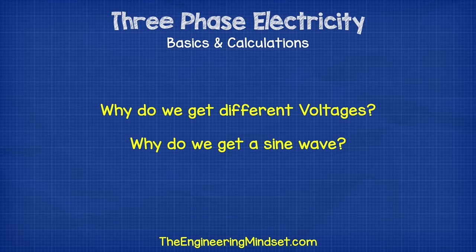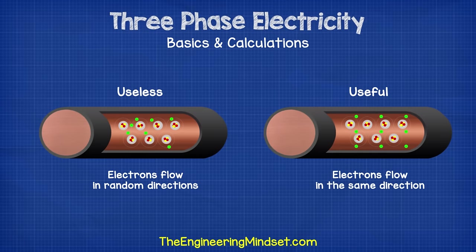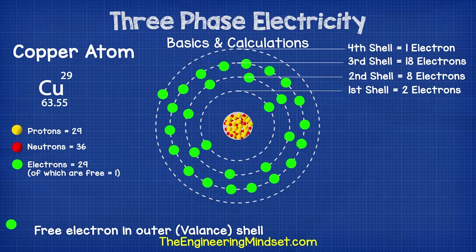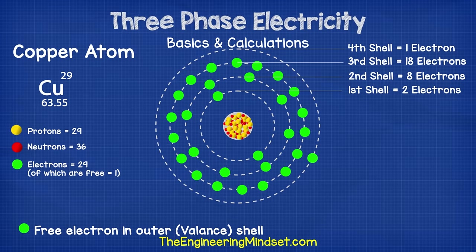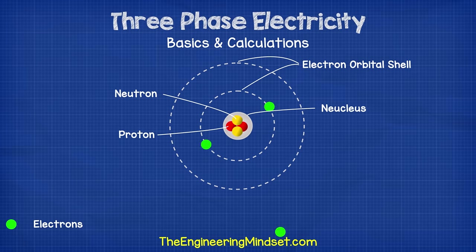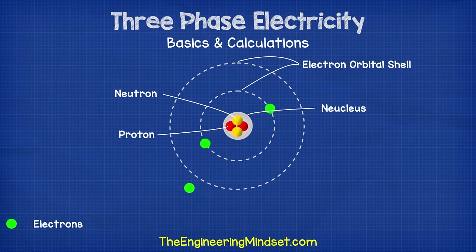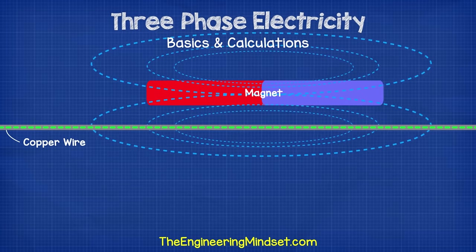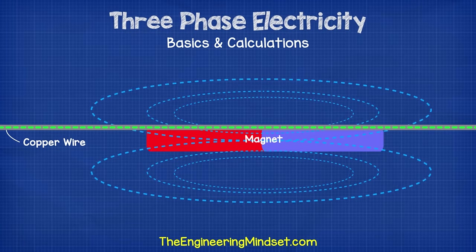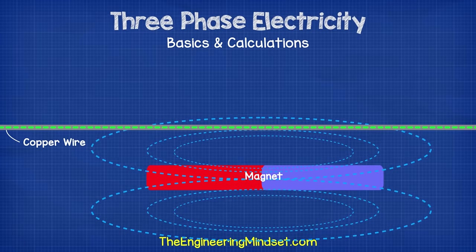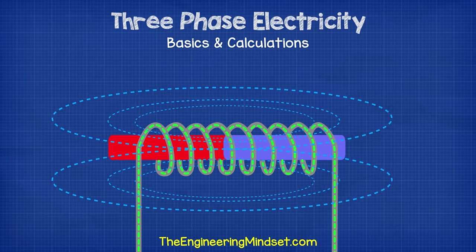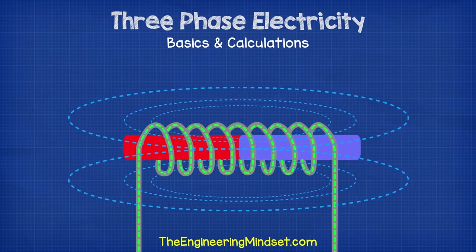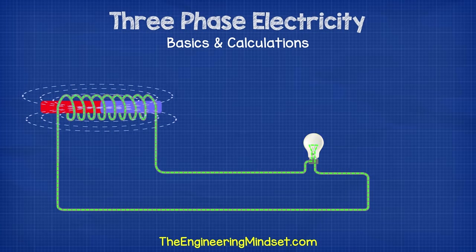So what's happening here? Why do we get different voltages and what do these sine waves mean? We get useful electricity when lots of electrons move along a cable in the same direction. We use copper wires because each of the billions of atoms inside the copper material have a loosely bound electron in their outermost shell. This loosely bound electron is free to move between other copper atoms — they move all the time but in random directions, which is of no use to us. To make them move in the same direction, we move a magnet past the copper wire. The magnetic field causes the free electrons to move in the same direction. If we wrap the copper wire into a coil, we can fit more copper atoms into the magnetic field and therefore move more electrons, giving us an alternating current.